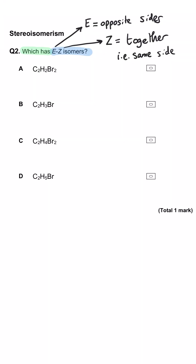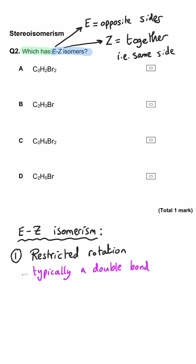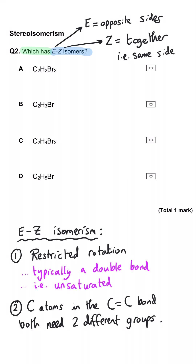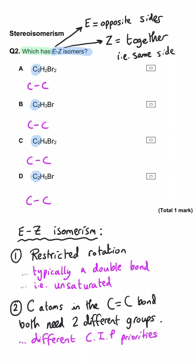Question 2: which has EZ isomers? For EZ isomers, the molecule needs a double bond — it needs to be unsaturated — and both carbon atoms in the double bond must have two different groups with different priorities. Looking at option A: it has two carbon atoms with four groups total, so it must have a double bond. It has two hydrogens and two bromines. We could arrange one hydrogen and one bromine on each double bond carbon, so A will have EZ isomerism. That is the correct answer.